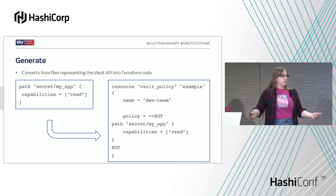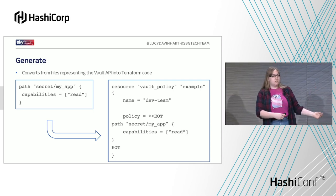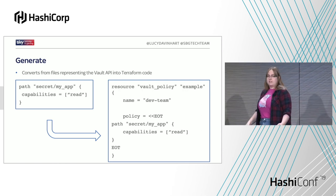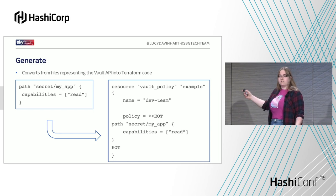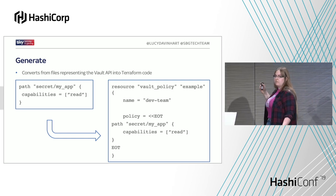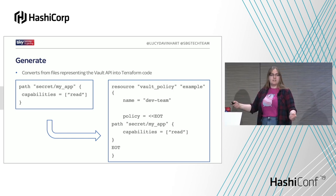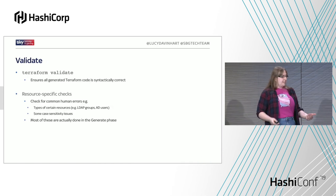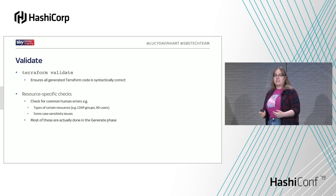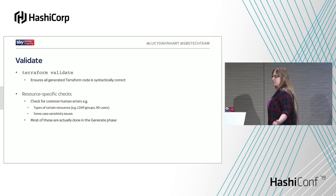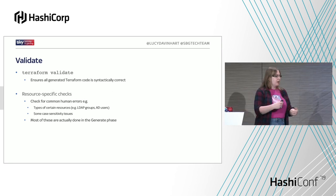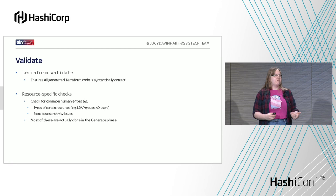Next, we have the generate phase where we actually write Terraform code. In the case of policies, this iterates through all our policy files, uses the file name as the name of the policy, and generates the necessary Terraform code. We save that to a Terraform file we can use later. We do a bit of validation — a lot of it happens during the generate phase because it's easier to write that way. Some resource-specific checks are done there, and we also do Terraform validate, which makes sure we've not generated gibberish and have actually written valid Terraform code.